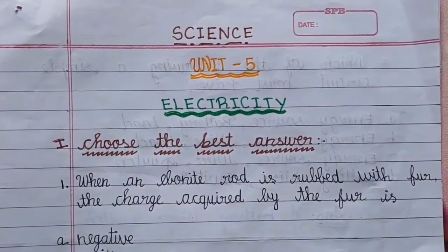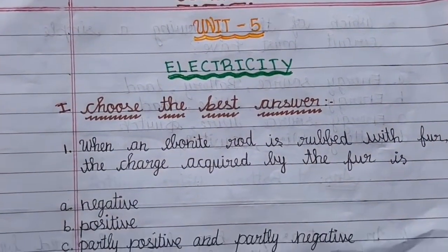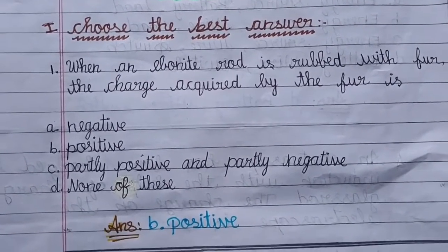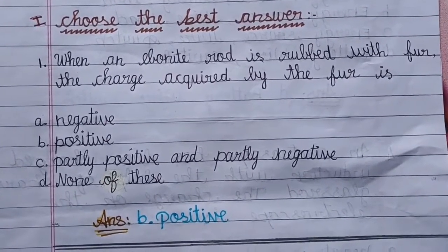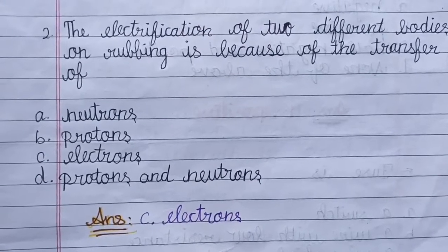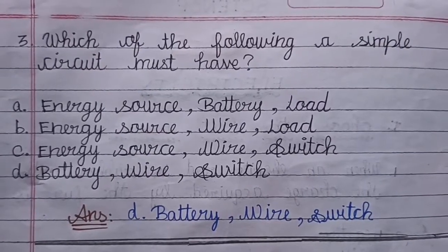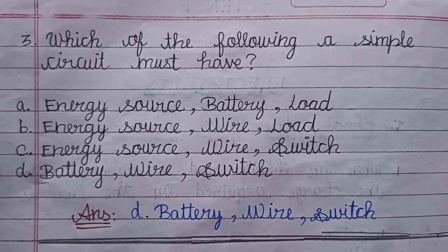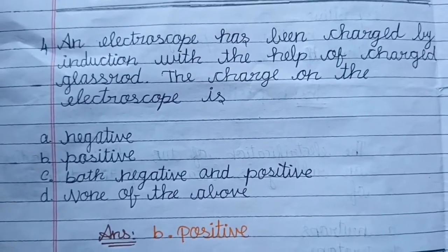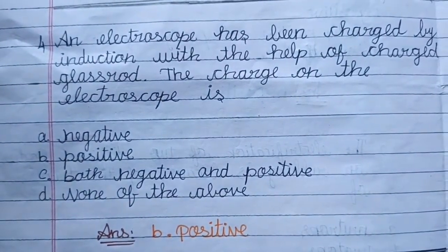Eighth Standard Science, Unit 5: Electricity. Promo Letter 1: Choose the best answer. Question No. 1, Answer: B, Positive. Question No. 2, Answer: Electrons. Question No. 3, Answer: D — Battery, Wire, Switch. Question No. 4, Answer: Positive.